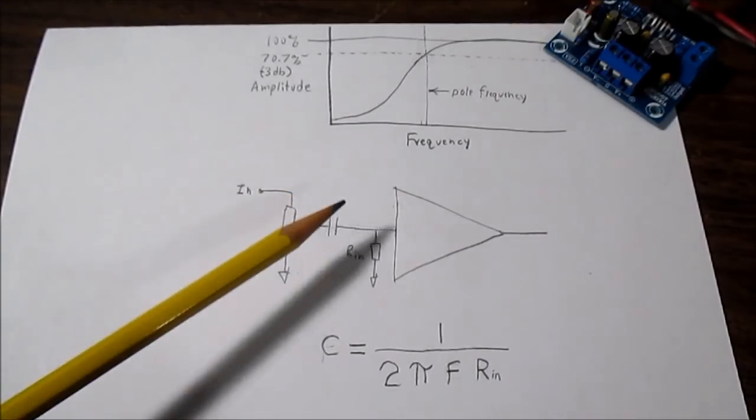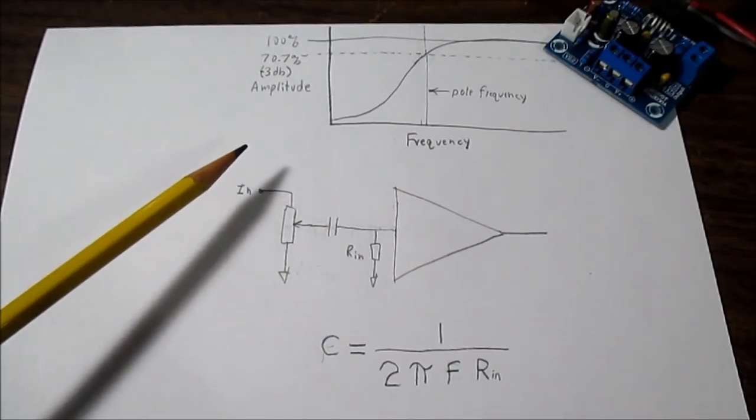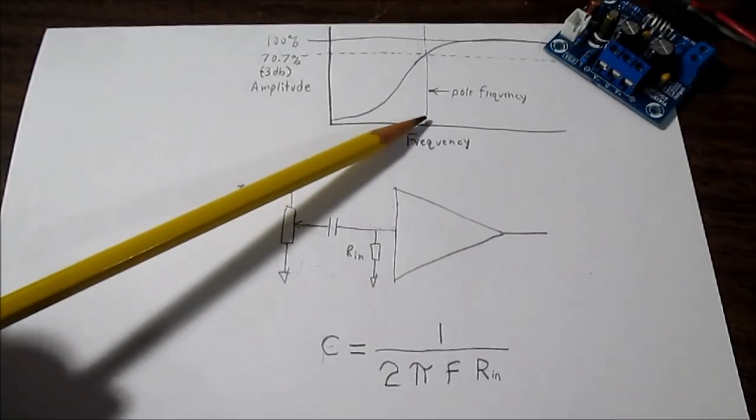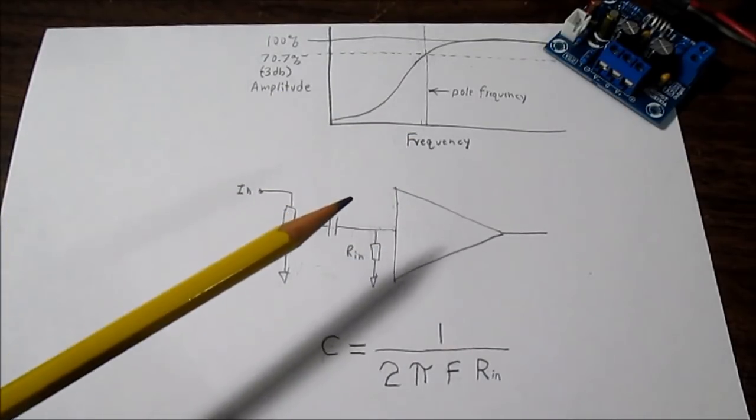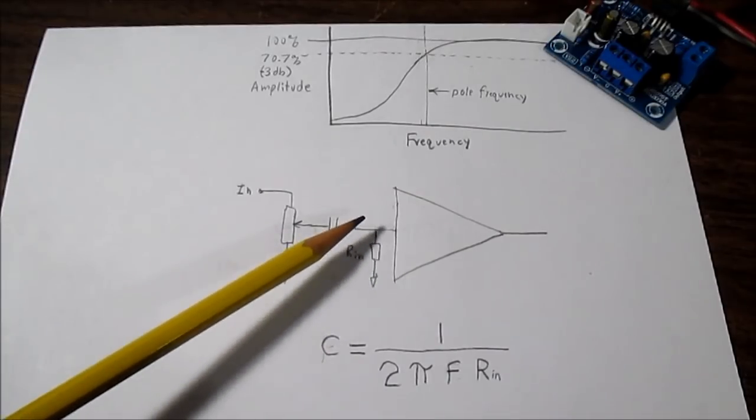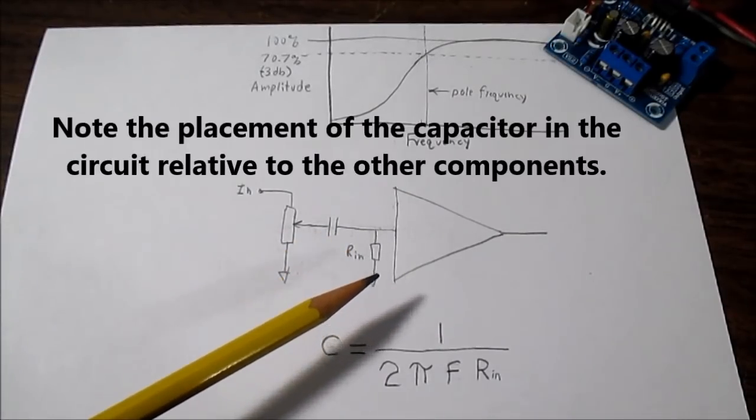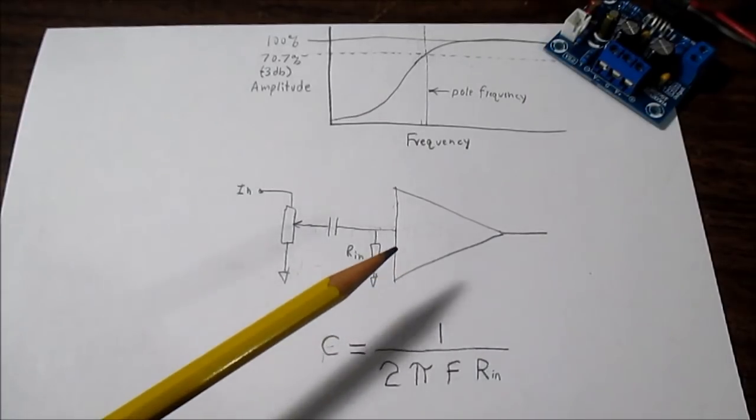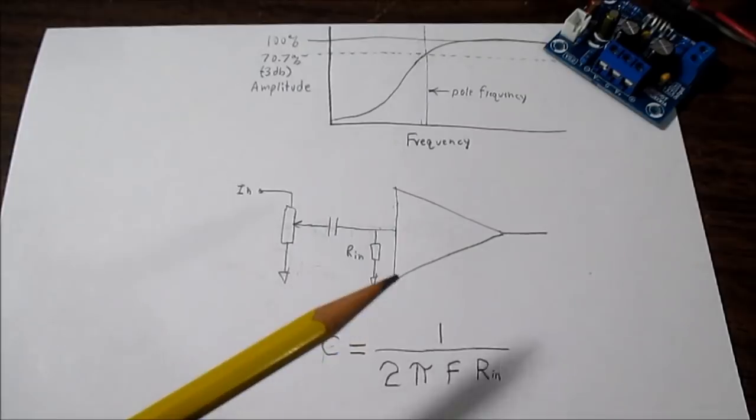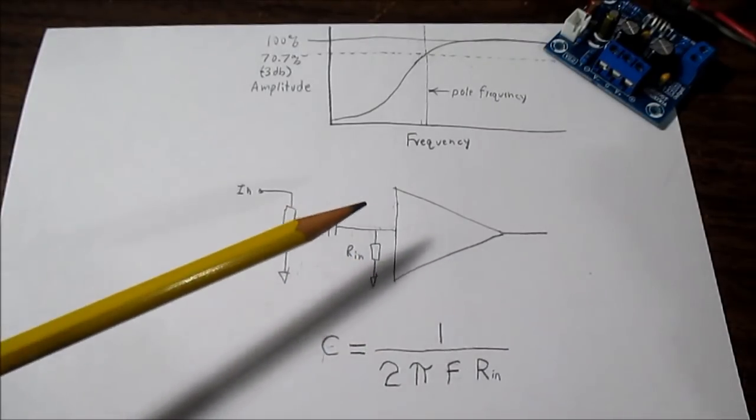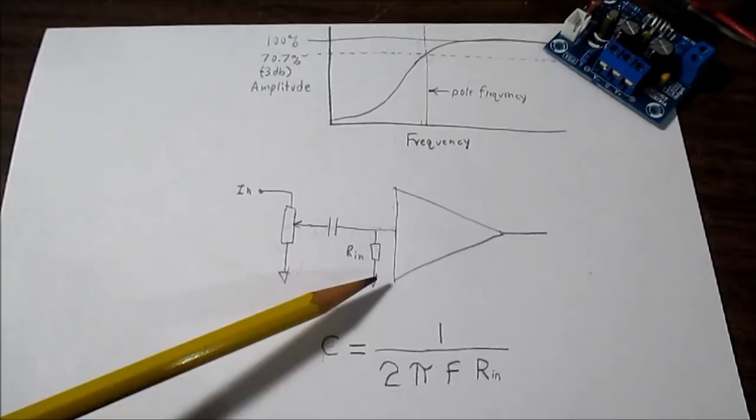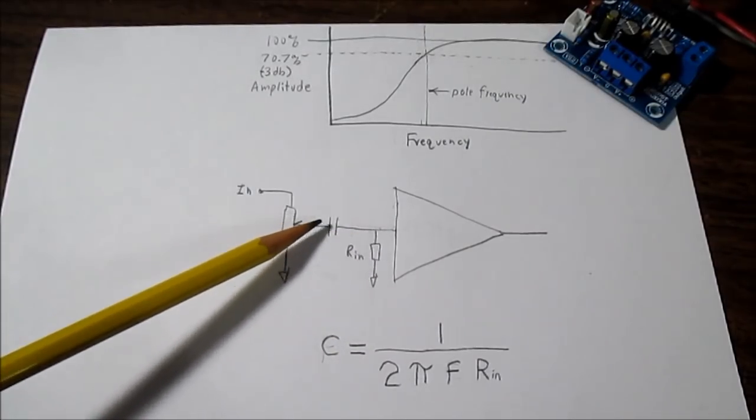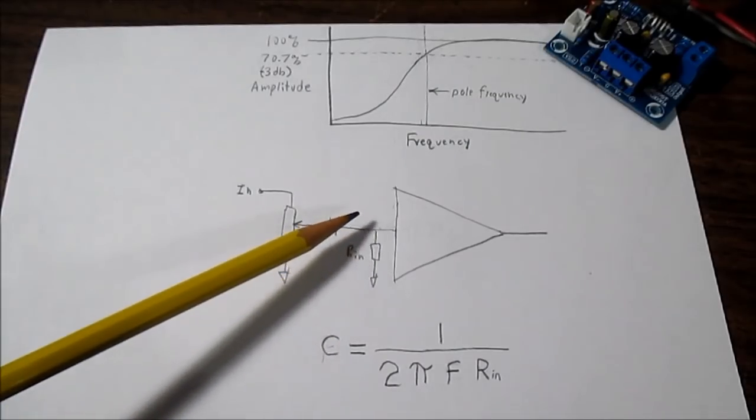So how do you figure the value of this capacitor? Well, you need to know a couple things. You need to know the frequency or this pole frequency like we talked about. And we need to know the input impedance of the amplifier. Now, the input impedance of an amplifier could be a long, drawn-out, complicated subject.